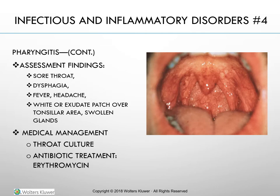Assessment findings for pharyngitis include sore throat, dysphagia, fever, headache, white or exudate patch over the tonsillar area, swollen glands, and a red beefy look to the throat. Medical management includes throat culture and antibiotic treatment such as erythromycin.